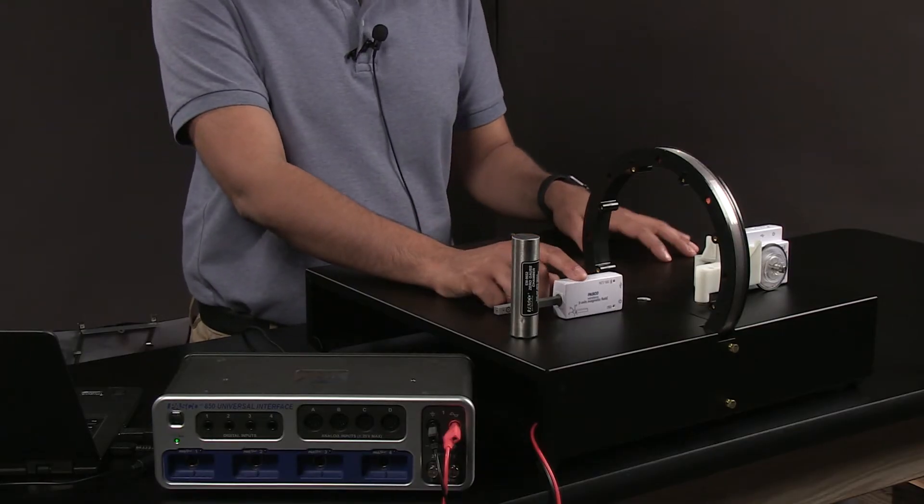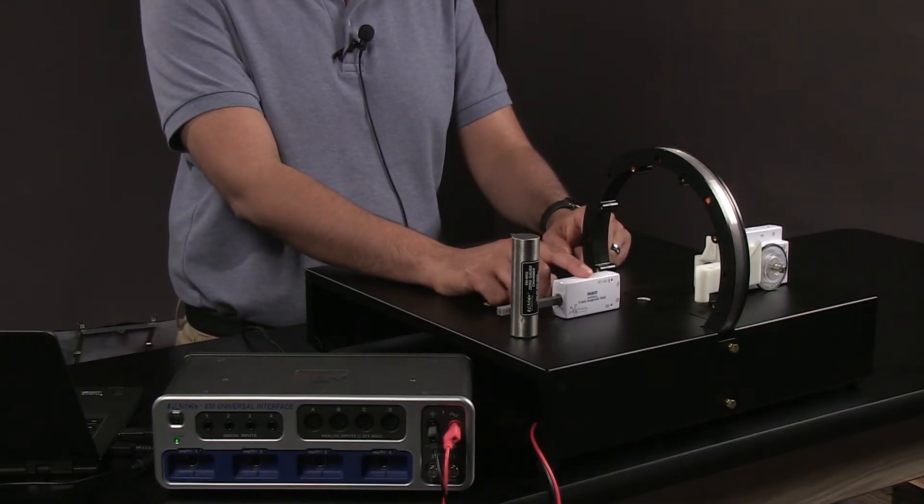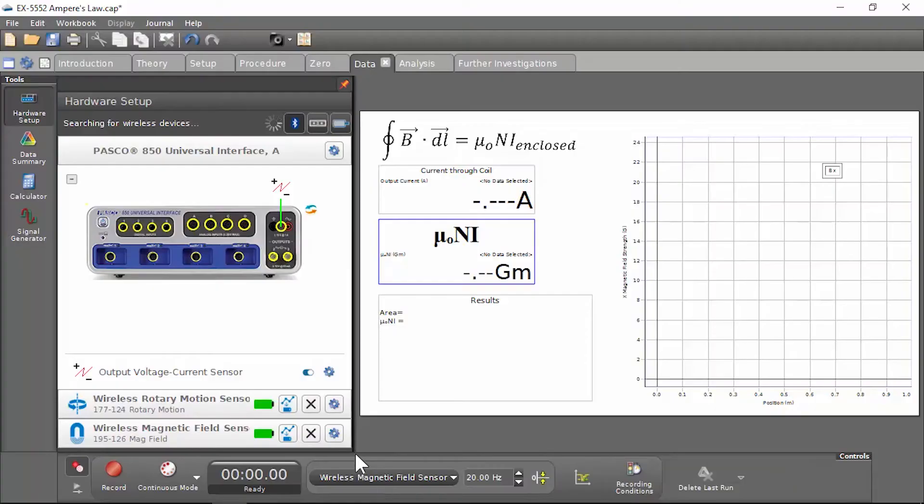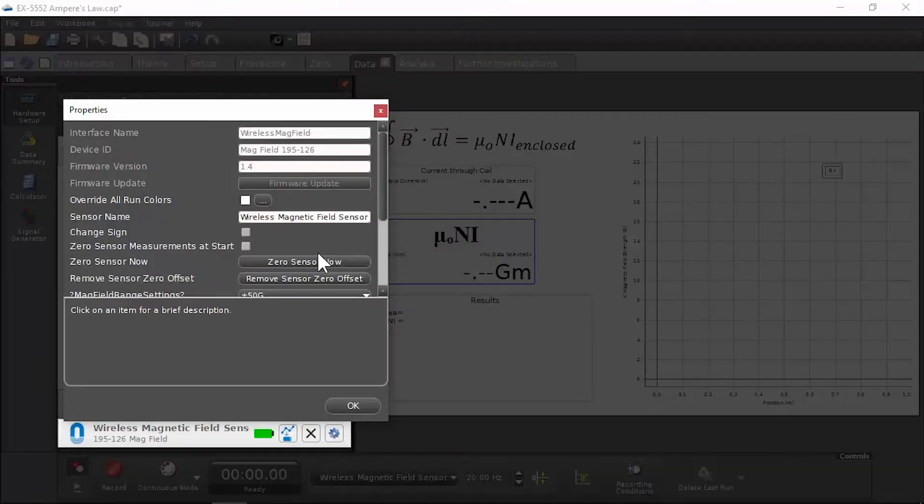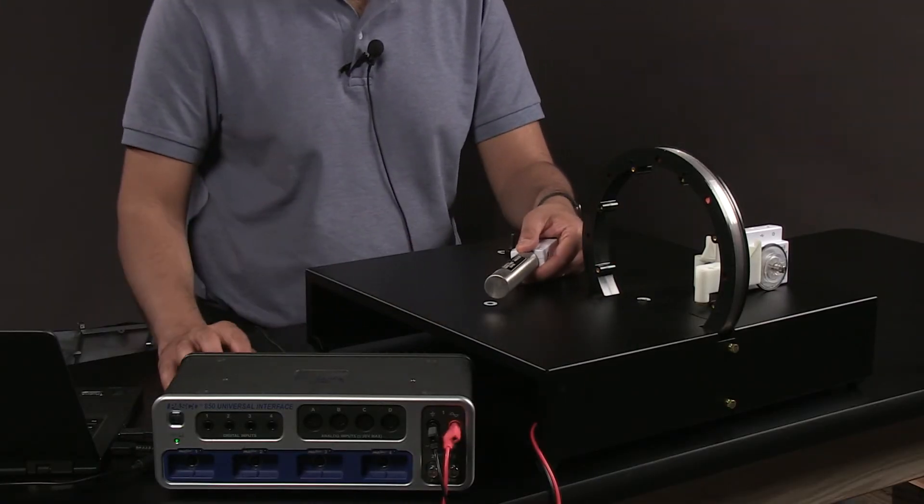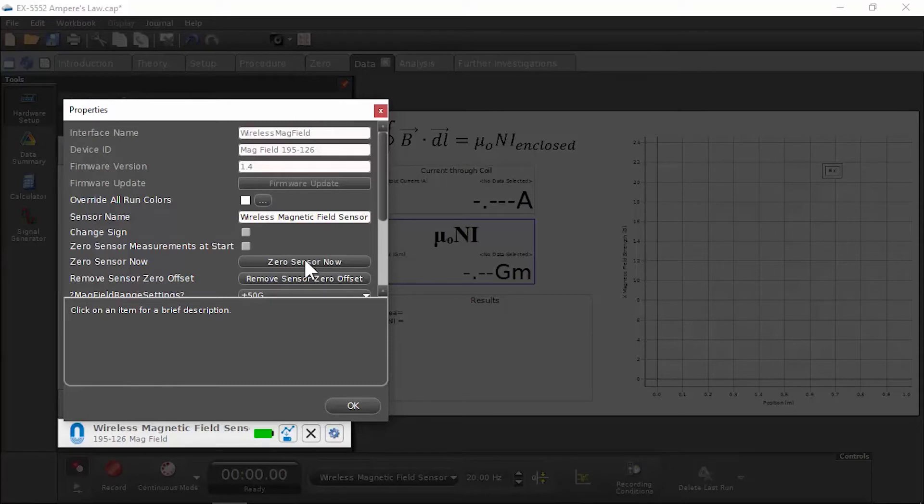Before we attach the magnetic field sensor onto our bracket, we need to zero it out using our Gauss Chamber. Let's click on Properties. We'll insert the probe into the Zero Gauss Chamber and click on Zero Sensor Now. Let's click OK.